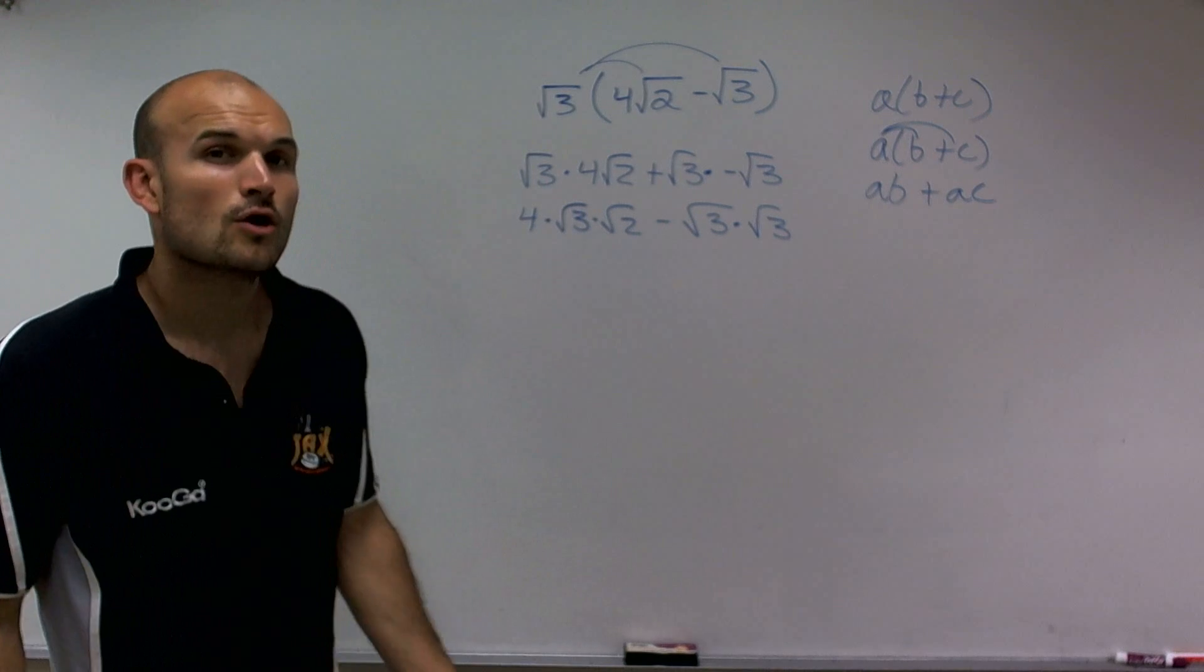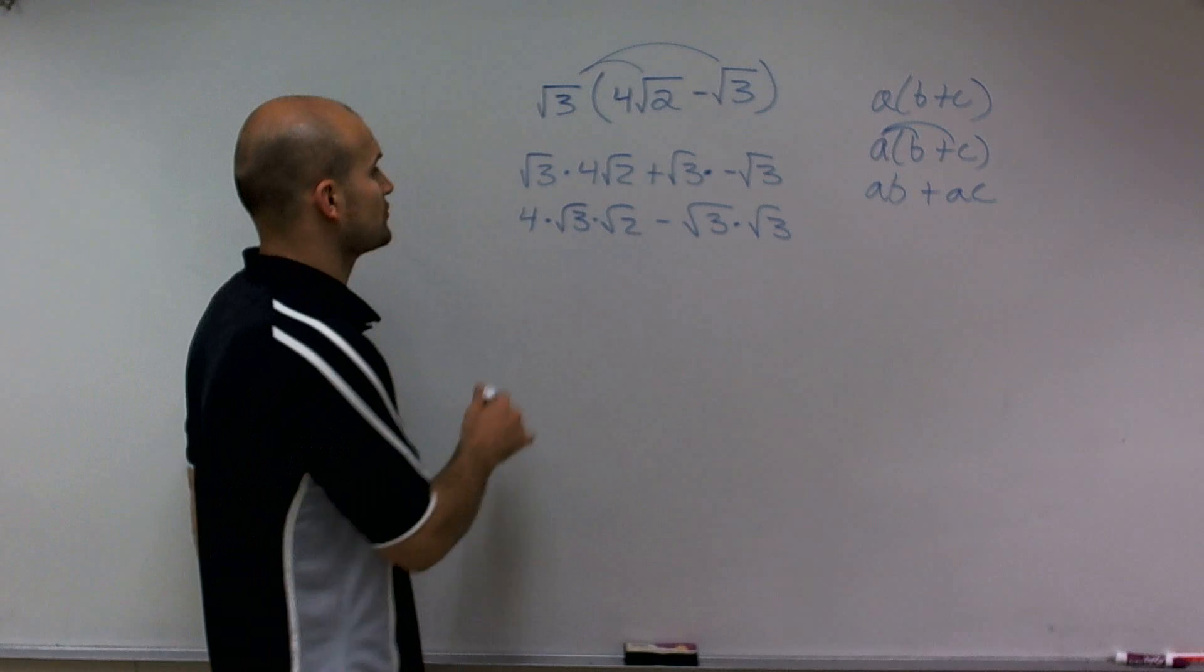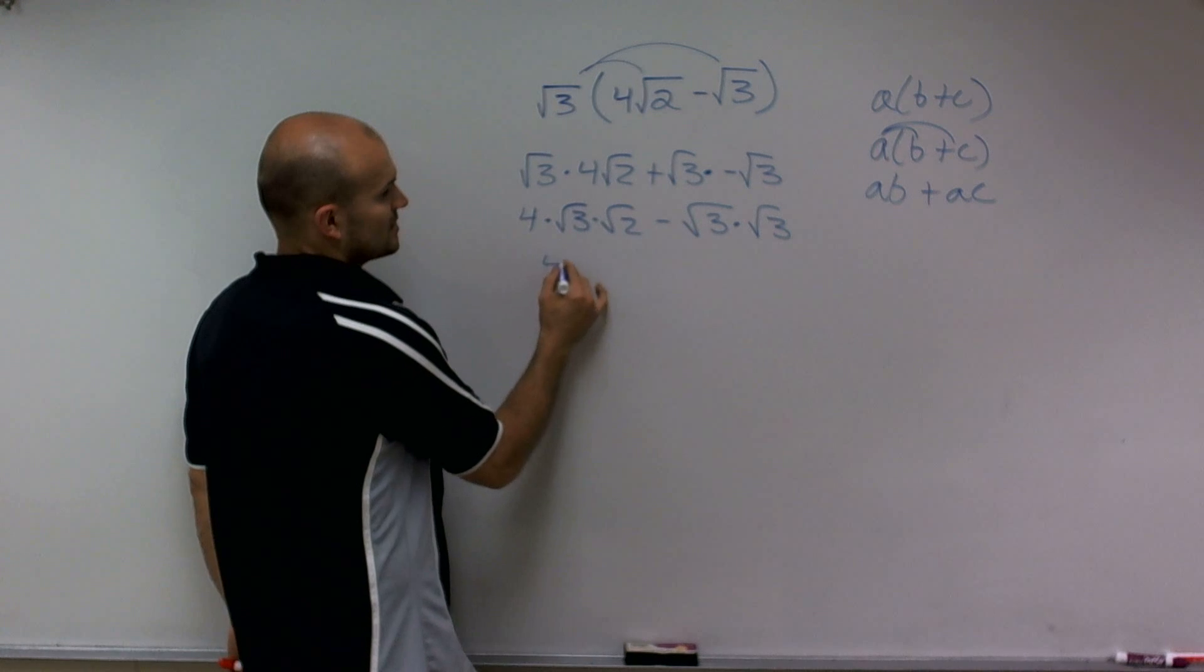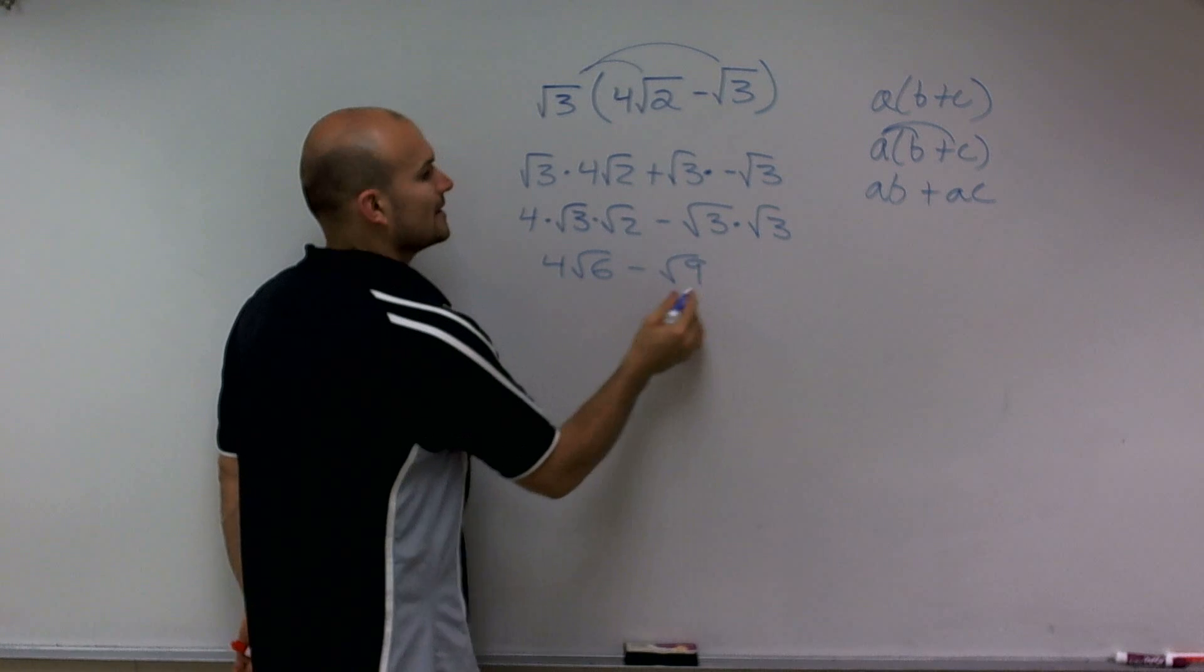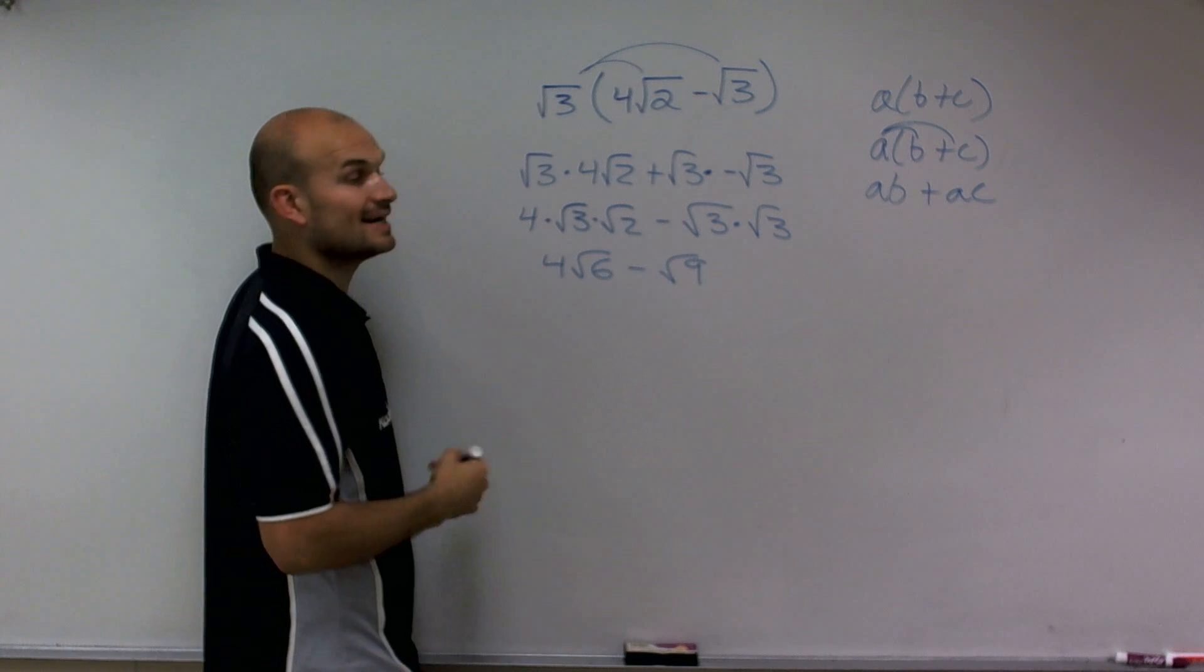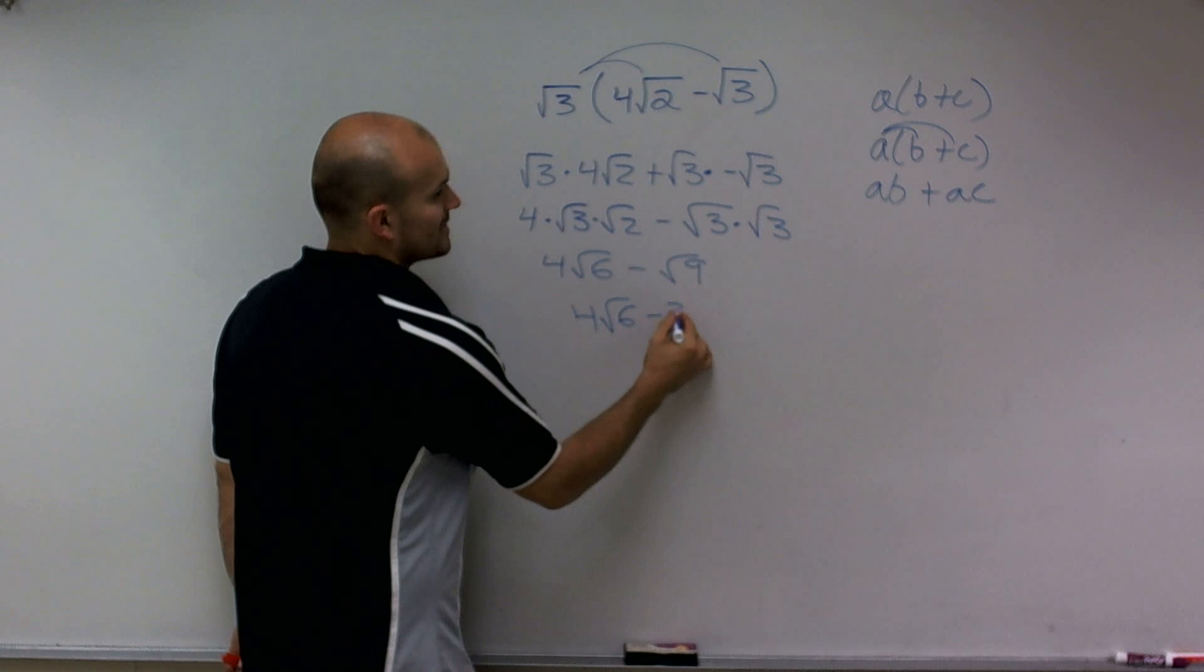So now when multiplying numbers with radicals, we multiply the radicands, meaning the numbers under your roots. So 3 times 2 is 6 minus 3 times 3 is the square root of 9. Well, I can simplify the square root of 9 into 3. So I have 4 radical 6 minus 3.